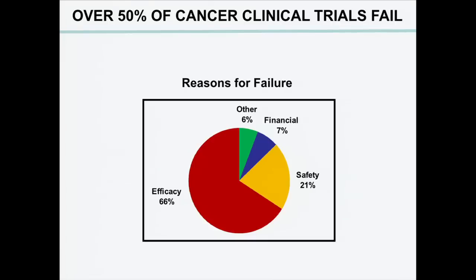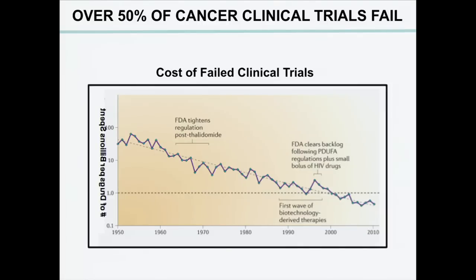But what I bet you don't know is that over 50% of cancer clinical trials ultimately fail. So why do they fail? They fail because the drug has been shown to either not be effective, or perhaps to have a side effect that is just too severe to be used in people. What does this mean in terms of the cost of failure? It's tremendous. If you think back to the 1950s, approximately 40 drugs were approved per billion dollars spent in research and development. Now, less than one drug is approved per billion dollars spent in research and development.